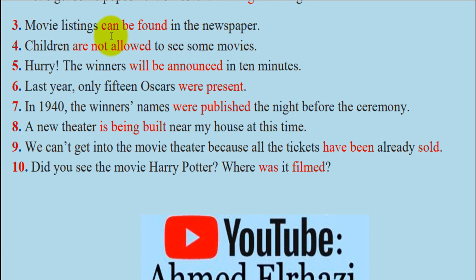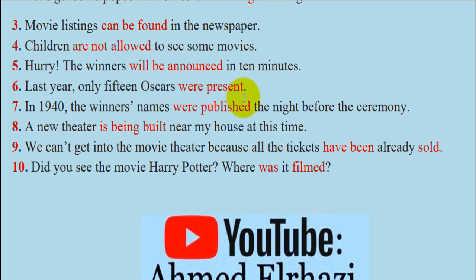Number 4: 'Children are not allowed to see some movies.' Number 5: 'Hurry, the winners will be announced in ten minutes' — future tense. Number 6: 'Last year only fifteen Oscars were presented' — simple past. Number 7: 'In 1941, the winner's names were published the night before the ceremony' — again simple past.